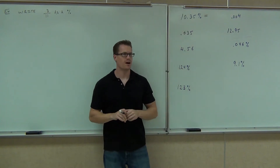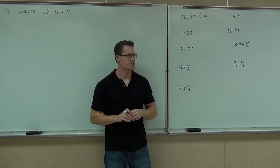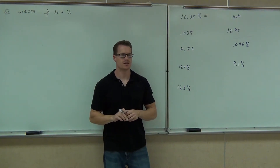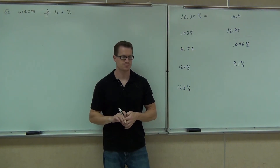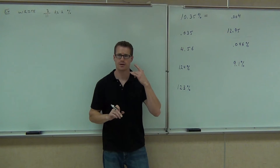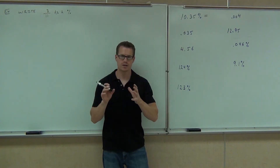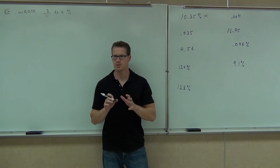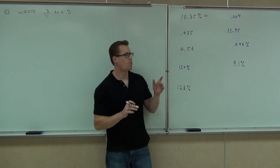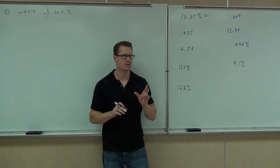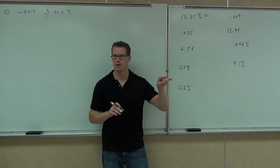We have 10.35%. I want to change that to a decimal. There are two ways to think of this. First, I'm going to understand that the decimal must be a smaller-looking number than the percent. If I made that 1035, that's making it bigger — I don't want to do that. So if I move to the right, I went the wrong way. That means I need to move to the left on this one.